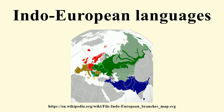Tocharian emerged around 3700 BC, extant in two dialects, attested from roughly the 6th to the 9th century AD, marginalized by the Old Turkic Uyghur Khaganate and probably extinct by the 10th century. Germanic emerged around 3300 BC, with earliest testimonies in runic inscriptions from around the 2nd century AD, earliest coherent texts in Gothic from the 4th century AD, and Old English manuscript tradition from about the 8th century AD.